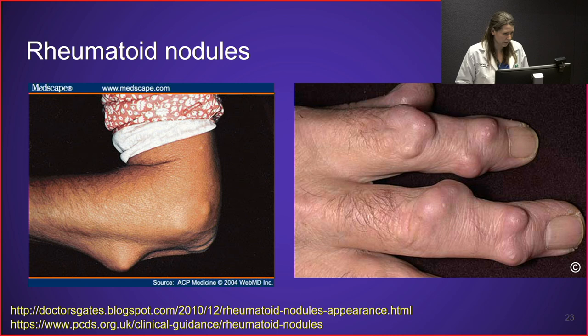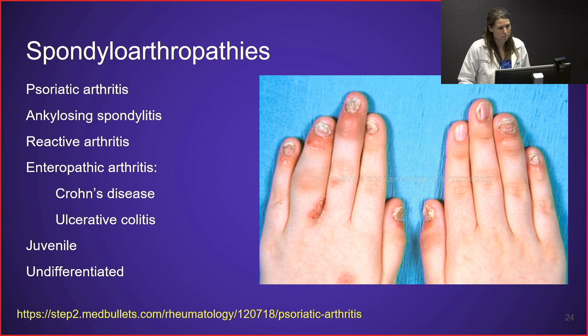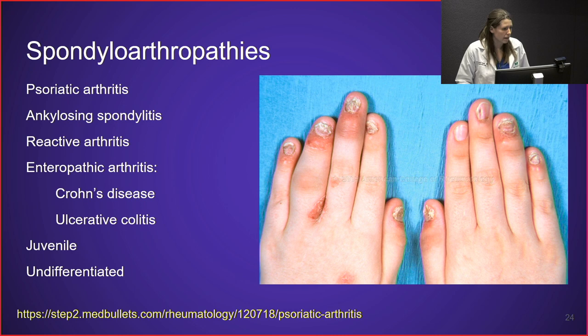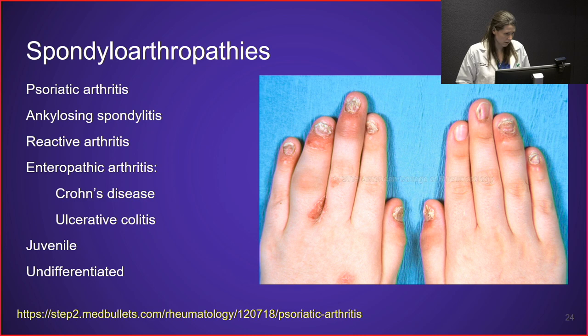Another group of arthritises with symptoms similar to rheumatoid arthritis are the spondyloarthropathies. These include psoriatic arthritis, which tends to involve joints of the hands, feet, and knees; ankylosing spondylitis, which tends to involve the spine; reactive arthritis, which develops after an infection; and enteropathic arthritis, associated with inflammatory bowel conditions like Crohn's disease or ulcerative colitis. Children can also develop spondyloarthropathies, and cases not fitting a specific category are called undifferentiated spondyloarthropathy.